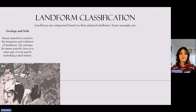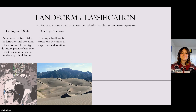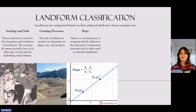This picture is pulled directly from your geology layer of the collection map and can be used as a clue to help understand what type of landform you're looking at and how it was formed. Next are the creating processes, which can help determine the size, shape, and location of a given landform. There's also slope, which is the measurement of steepness and influences the intensity of creational processes, and is often used to describe landforms.